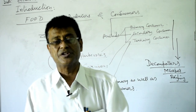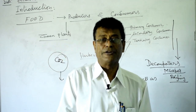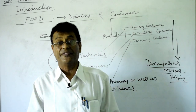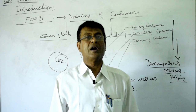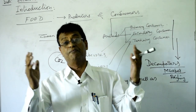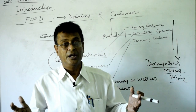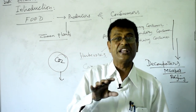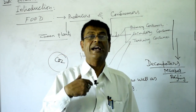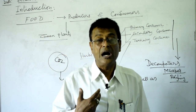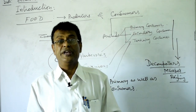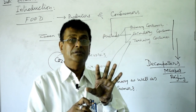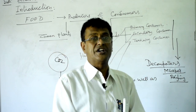The plants never make food for you or for the animals — they make food only for themselves. But they make it in such bulk that they only use a little bit for their own purpose, and the rest is taken by animals like us — herbivores, carnivores, tertiary carnivores, and so on.